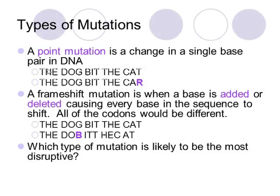The two key types of mutations are point mutations and frameshift mutations. In a point mutation, you simply change one letter. Using a word analogy: 'the dog bit the cat' becomes 'the dog bit the car' — changing a single letter. Sometimes changing one letter drastically changes the meaning of a sentence, and similarly, just one letter change could drastically change a person's phenotype. For example, Tay-Sachs disease is caused by just a single letter change, and that results in death usually by age 2.